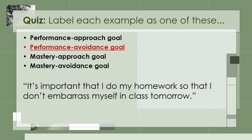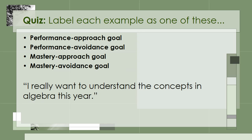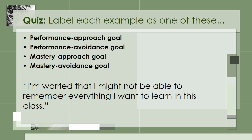Let's do another one. 'I really want to understand the concepts in Algebra this year.' This student is demonstrating a Mastery Approach Goal because he's focused on how he's doing and developing his competence. This student says, 'I'm worried that I might not be able to remember everything that I want to learn in this class.' This is an example of a Mastery Avoidance Goal. It's a Mastery Goal because the student is focused on her own standards, not on demonstrating competence to others. It's an Avoidance Goal because the focus is on what she might not be able to remember.